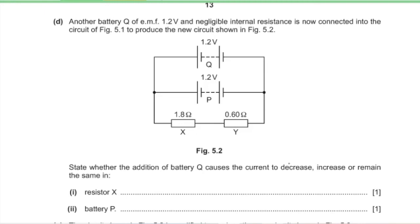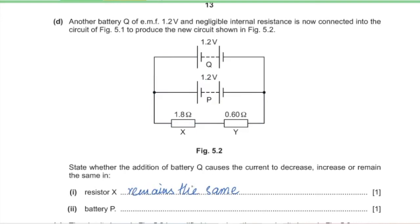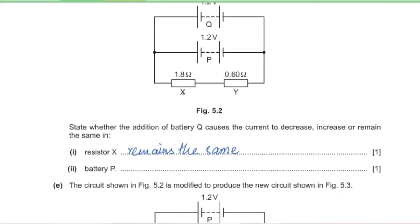Another battery Q (EMF 1.2 V) is now connected into the circuit. State whether the current in resistor X increases, decreases, or remains the same. For resistor X, whether considering the complete loop or the outer loop, the effective EMF is unchanged, so the current in resistor X remains the same. For battery P, since identical terminals of both batteries face each other, the net PD = 1.2 − 1.2 = 0, so current through battery P decreases to zero.